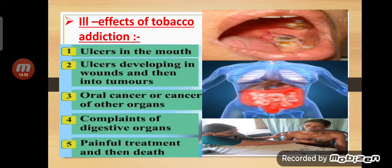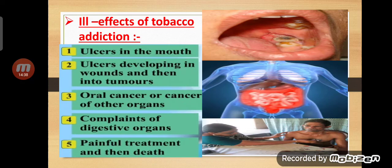That means you can get stomach cancer, liver cancer, or cancer in any part inside the body. A person who develops cancer in this way has to undergo very painful treatment called chemotherapy. All your hair will fall out and your immunity goes down — it is very, very painful. Even after that, one cannot be sure that cancer will be cured. When you smoke a lot or chew tobacco, you can more often get cancer of the mouth, throat, stomach, or any part affected.